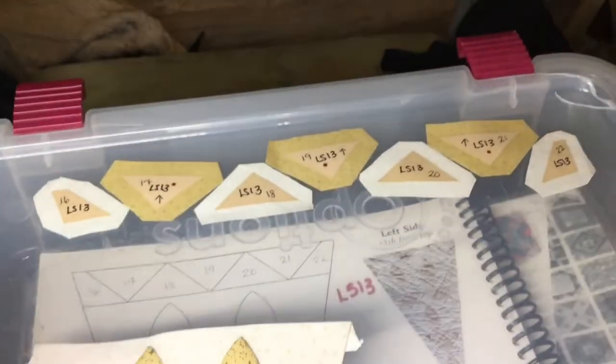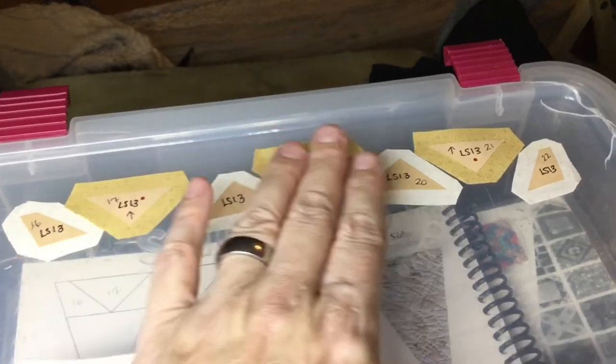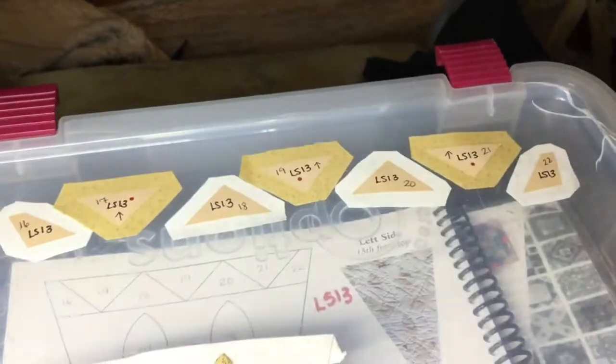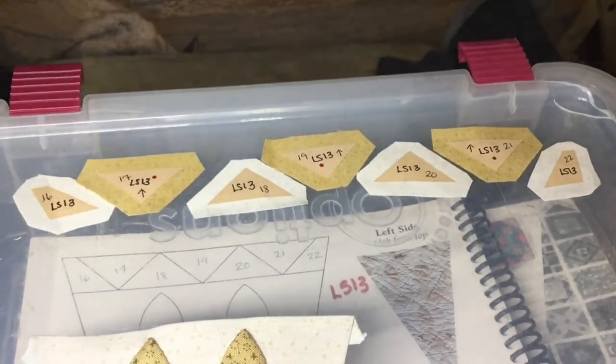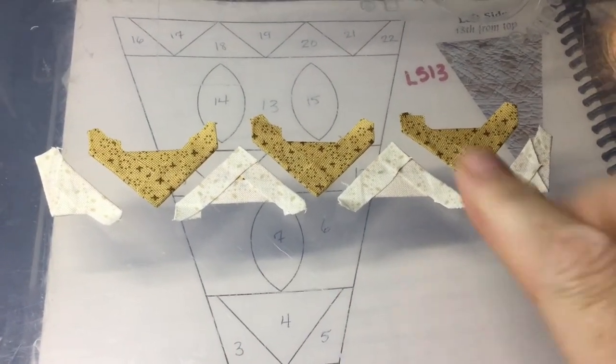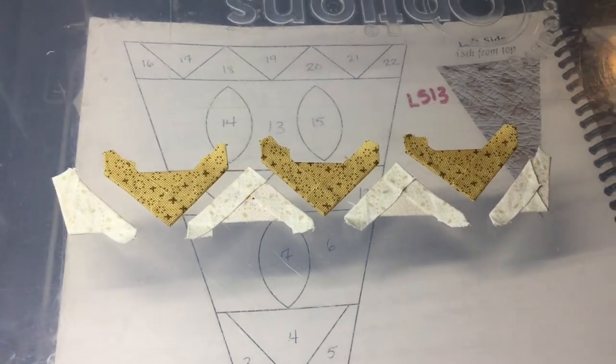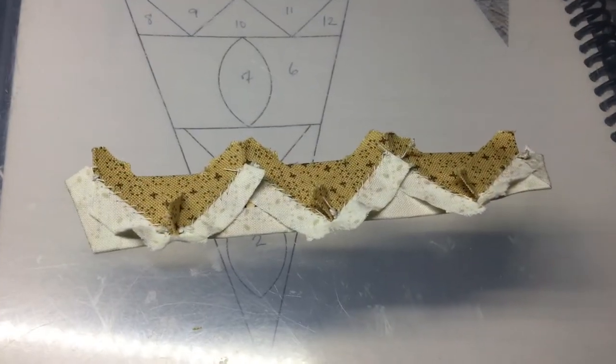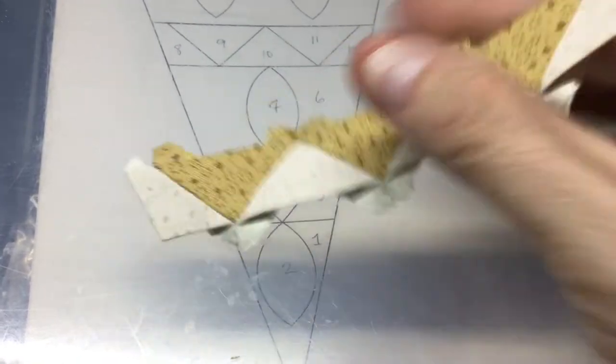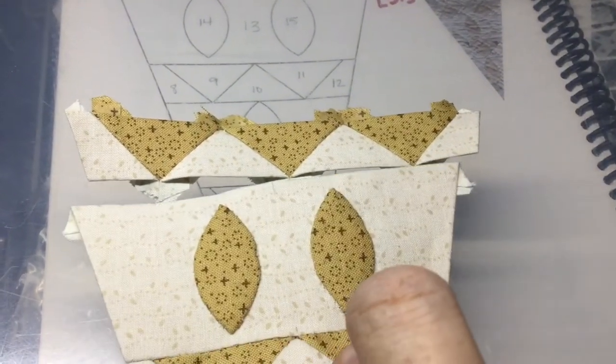So the next section will be this top band and I'm going to baste it just like I did the other ones and then stitch them together. So I got my pieces all basted so now I will stitch them together into the band. So I got my band all sewn together and so now I'm going to attach it to the top of my triangle.